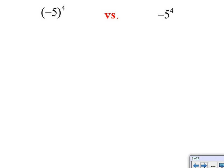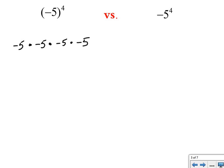There is a difference between what's on the left and what's on the right on this slide. The expression on the left contains parentheses around the negative 5, with an exponent of 4 outside the parentheses. This means the base is negative 5 and the entire quantity negative 5 is getting multiplied by itself 4 times: negative 5 times negative 5 times negative 5 times negative 5, which gives us a positive 625.